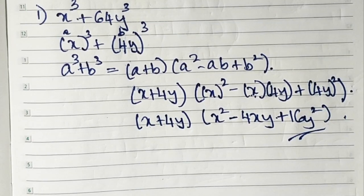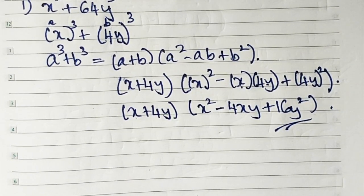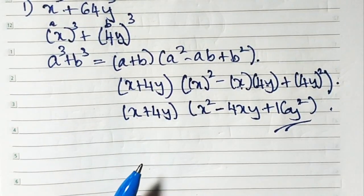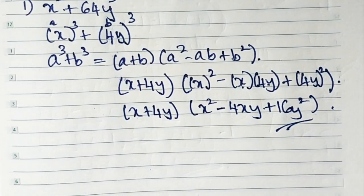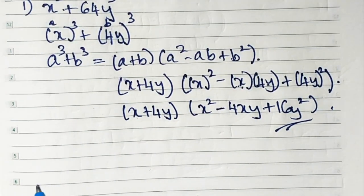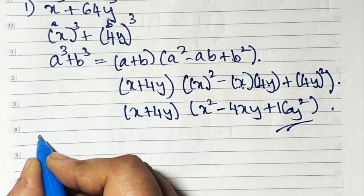Sum number 2 — 125p cube plus q cube — is easy. 125 is going to be 5p and the other side is q. So it is easy, you can do it on your own. I'll do sum number 3.